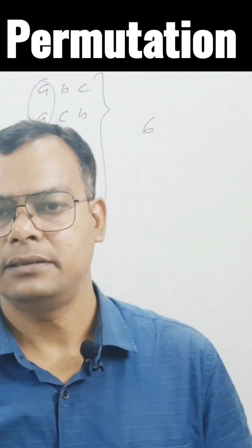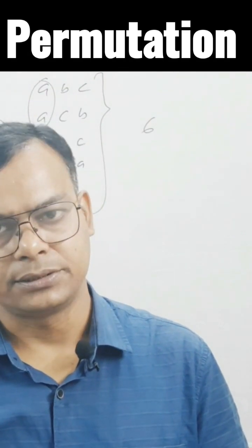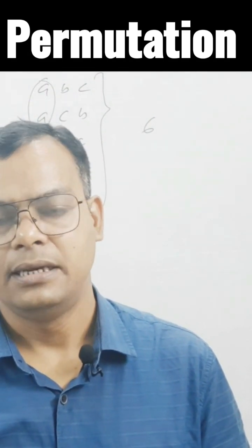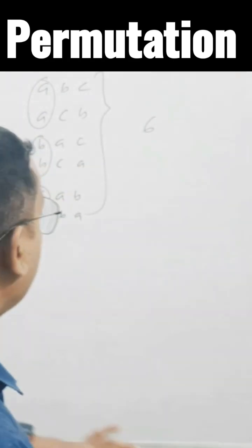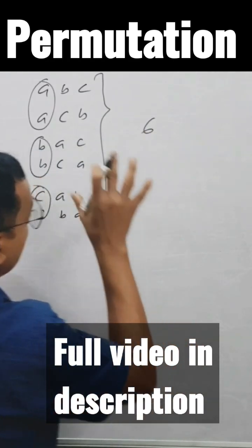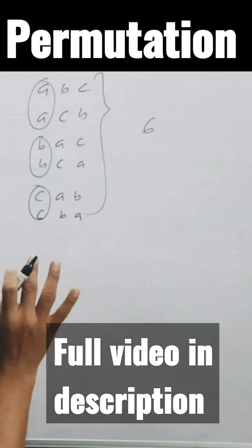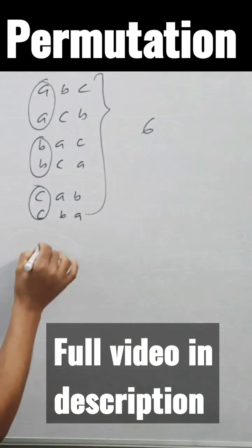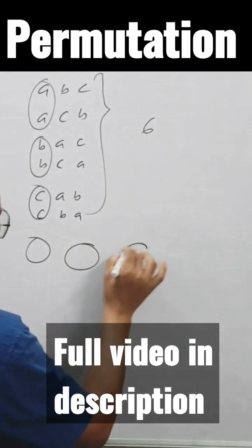How many letters have we taken? We have taken three letters - A, B, C. Three letters taken, and I have calculated them. How to arrange? That means if I see like that, try to understand.